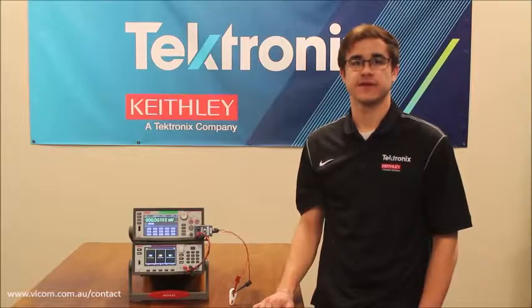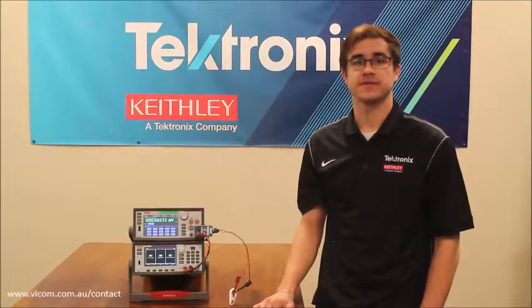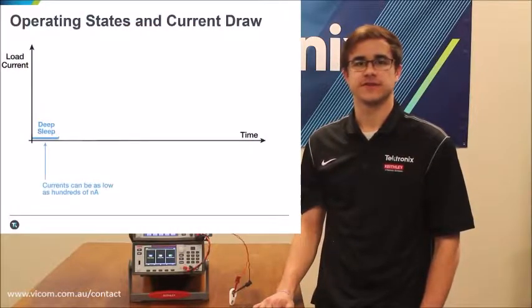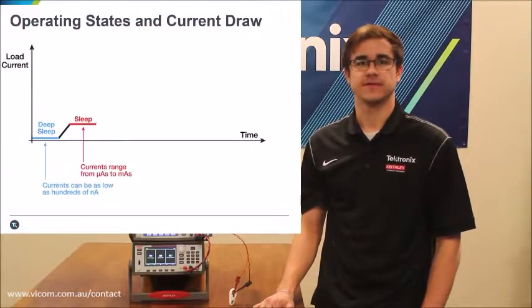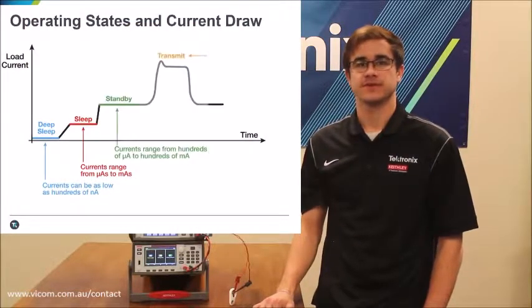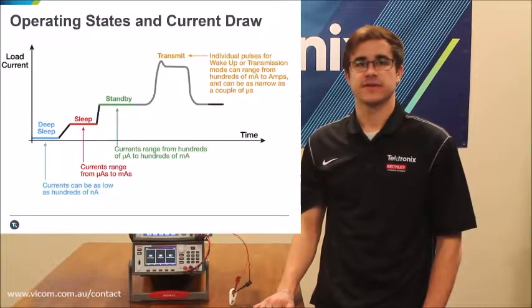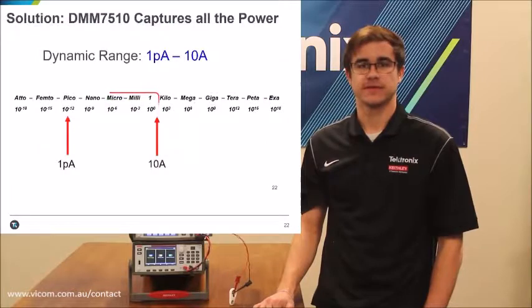Because these types of devices have multiple quickly changing states of operation, each consuming a different level of power, it is important to have an instrument that is able to measure both very low and high current. An IoT device can draw as low as hundreds of nanoamps in sleep mode, and up to a couple of amps in transmit mode. This is no problem for the 7510, which has a dynamic range of 1 picoamp to 10 amps.